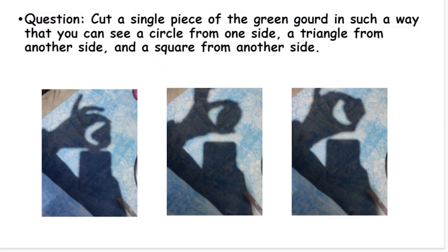So in the episode we had a very interesting question which was to cut out a single piece of gourd in such a way that you can see a circle from one side, a triangle from the other and a square from the third side. We got some amazing answers from the participants. So all these hands on activities and homework problems along with the stories engages everyone and helps them think critically.